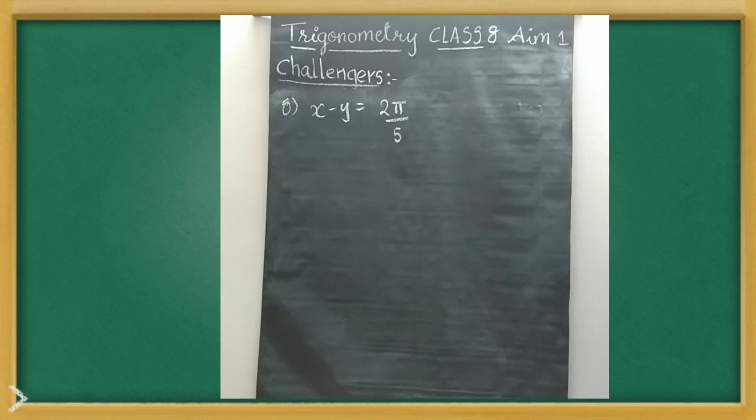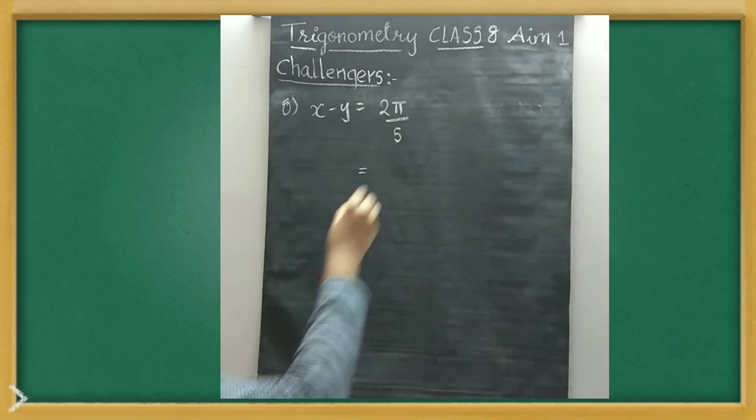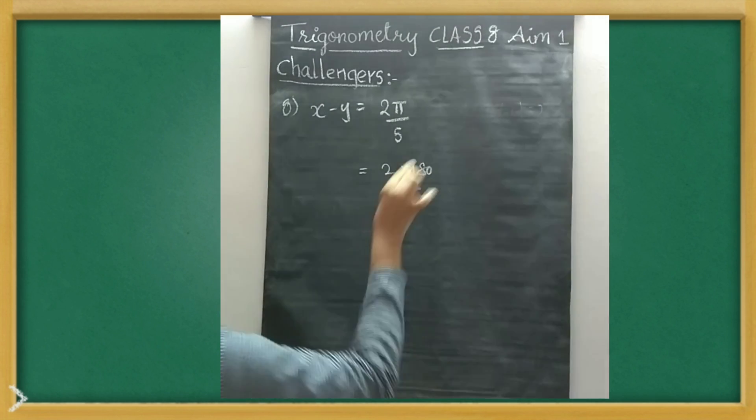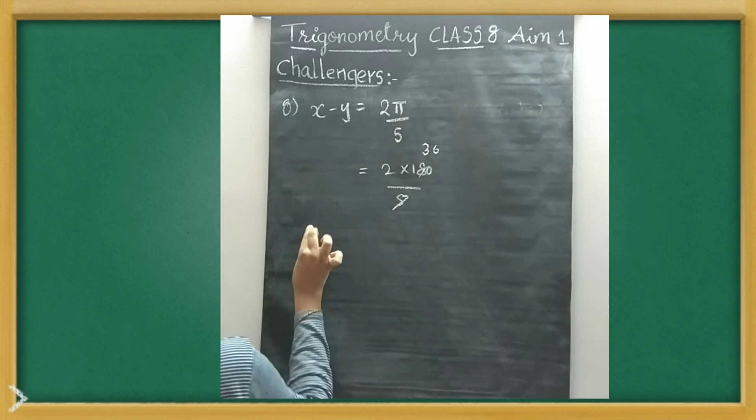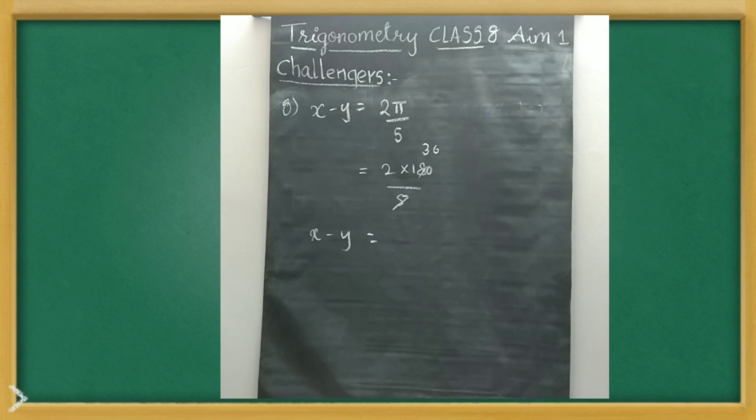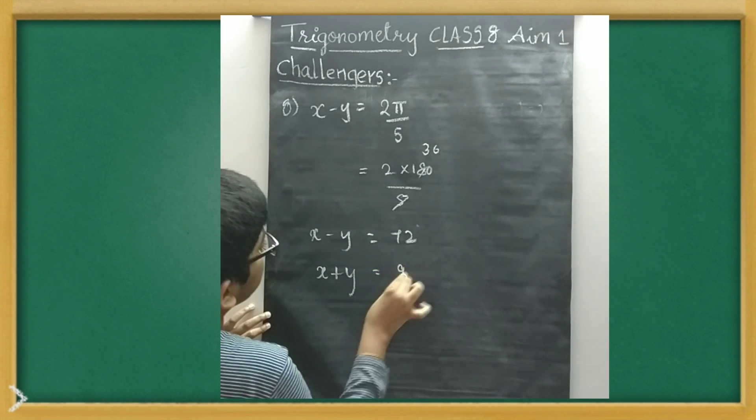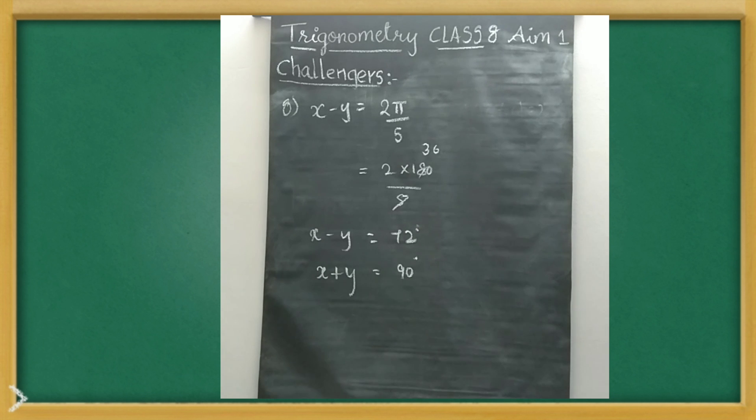Let's start. I will write the given data on the board. This was the given data. That means x minus y, I am considering them as the acute angles. First, here it is not circular, so pi is not 22/7. It is 180 only. 5 or 3 is 15 and 6, 36. Now x minus y is 36.